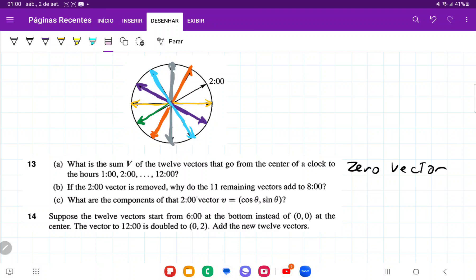So why do the 11 remaining vectors add to eight? And then we can say, because there's nothing to cancel out that eight vector, right? So I won't write this down, just leave it to you guys to write it the way that you want. We can say that all the other vectors add to zero except the eight vector.